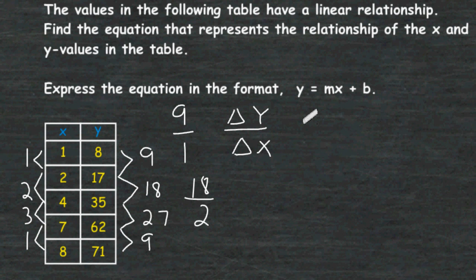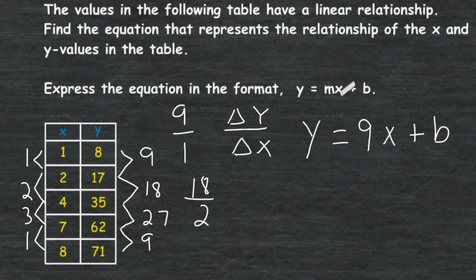We have already determined what the m value is in our equation. We substitute that variable with our change in y over the change in x, which is 9 over 1 — we can just write that as 9. We bring down the variable y, the variable x, and the variable b.